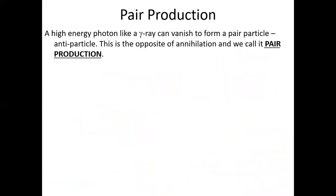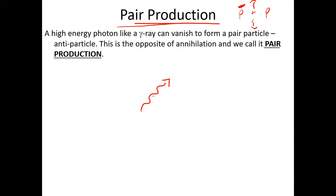Today we're looking at pair production, which is the opposite of annihilation. In annihilation, a particle and its antiparticle meet and form photons. In pair production, a photon moving through space randomly converts from energy into mass, forming an electron and a positron. The two particles move off in different directions to conserve momentum.